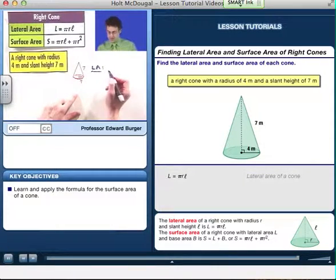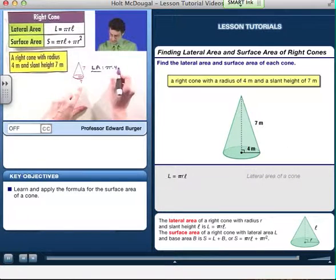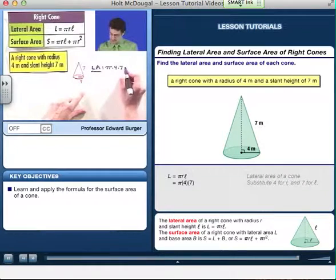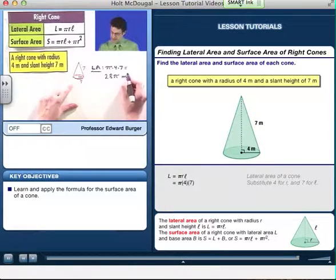So the lateral area we know to be pi times the radius times the slant height, which is 7. And so I see this answer is 28 pi, and my units are meters, but it's area squared.